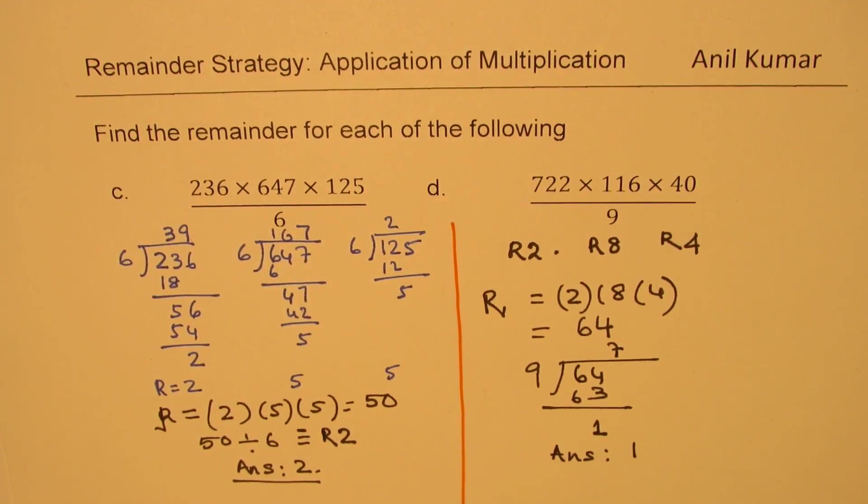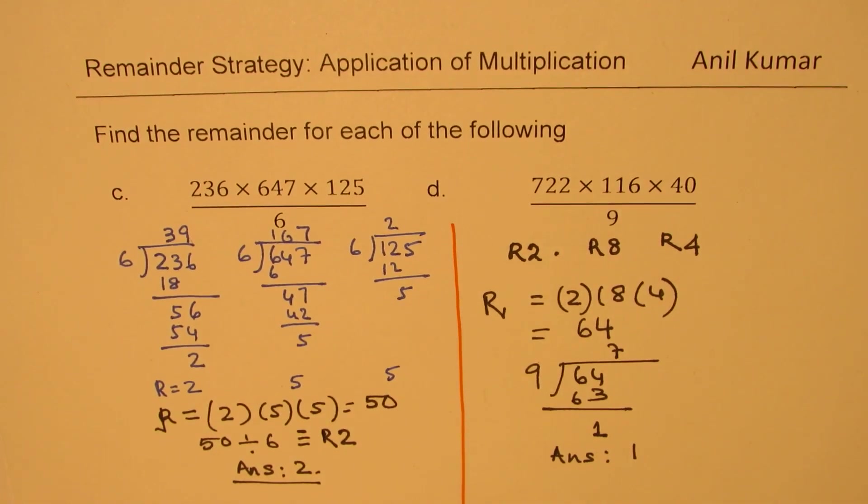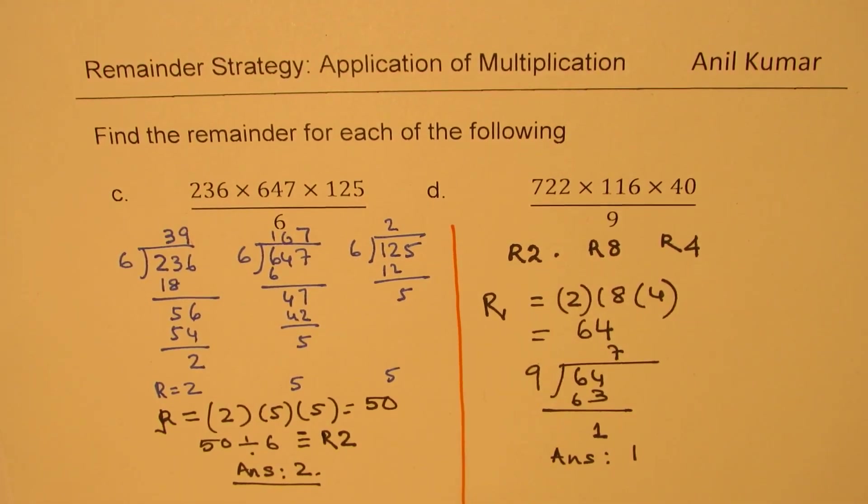So, that is the strategy. Now, I hope this strategy is absolutely clear. So, when you multiply all the remainders, the number, if it is more than the divisor, then you again divide what you got by the divisor to find the correct remainder. Perfect. Now, let's take the examples and see how easily we can solve all such questions.